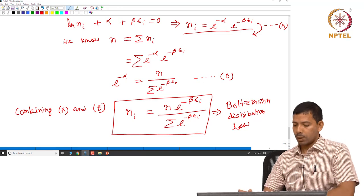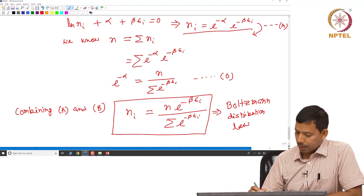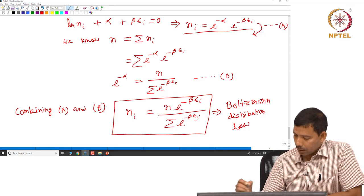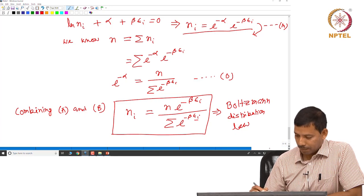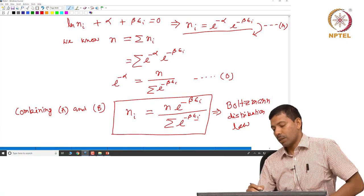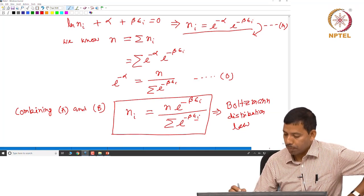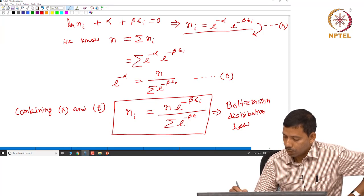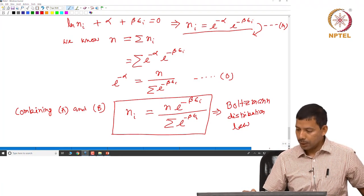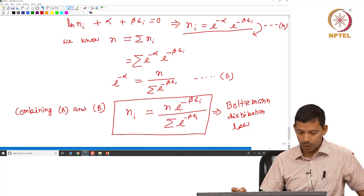What this distribution law says is that Nᵢ, the number of particles in the state with energy εᵢ at equilibrium, is given by the Boltzmann distribution. Boltzmann distribution basically dictates the distribution of particles across energy states.